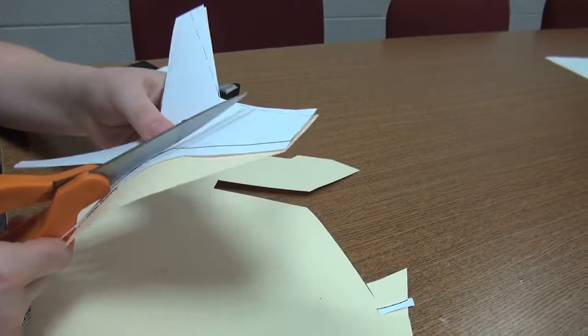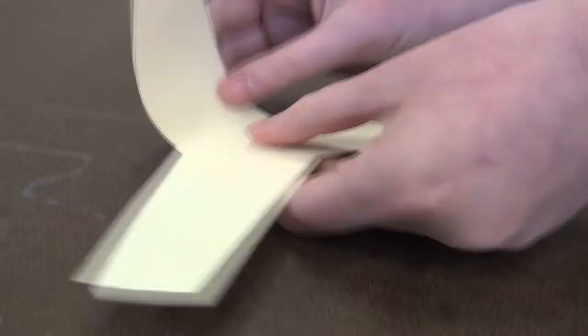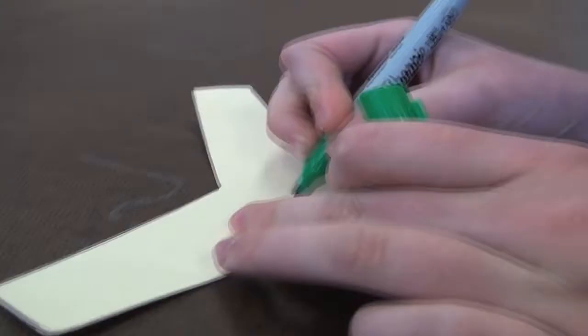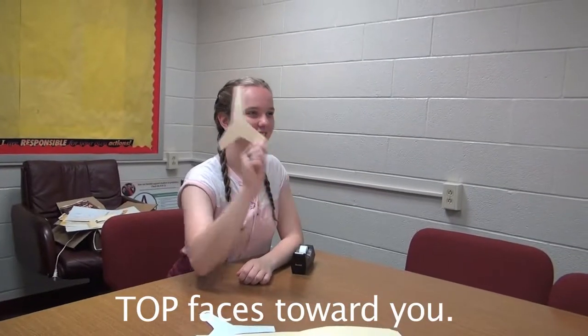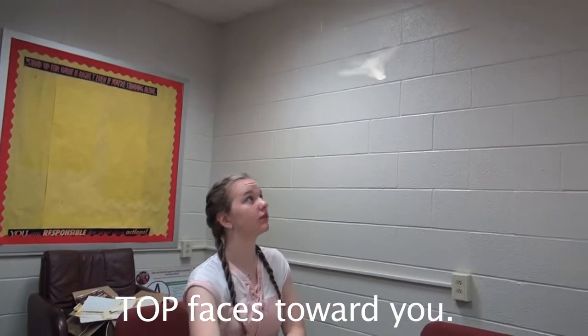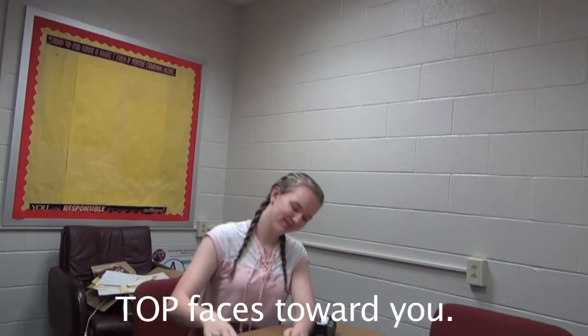If you just cut out the shape, establish which side will be on top and give it a bit of dihedral. Then it sort of flies with very little effort. When you throw, make sure the top faces you. It lays over right away and sort of hovers down, which is kind of cool.